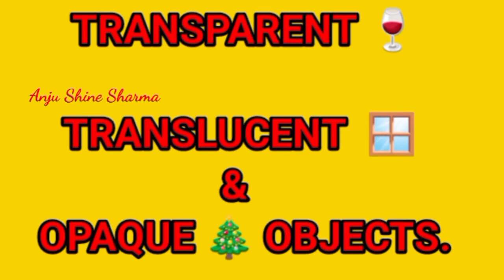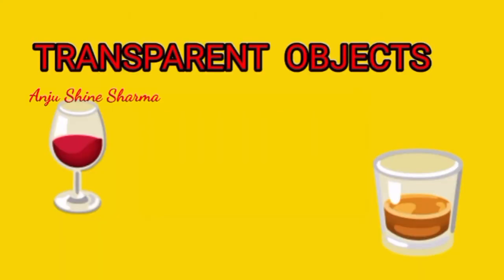Depending on the nature of the object, light may pass through completely, partially, or not at all. Accordingly, objects can be placed in three groups: Transparent Objects, Translucent Objects, and Opaque Objects. Transparent objects allow light to pass through them completely. Other objects can be seen clearly through them. Examples include clear glass window, car windscreen, glass tumbler and spectacles.